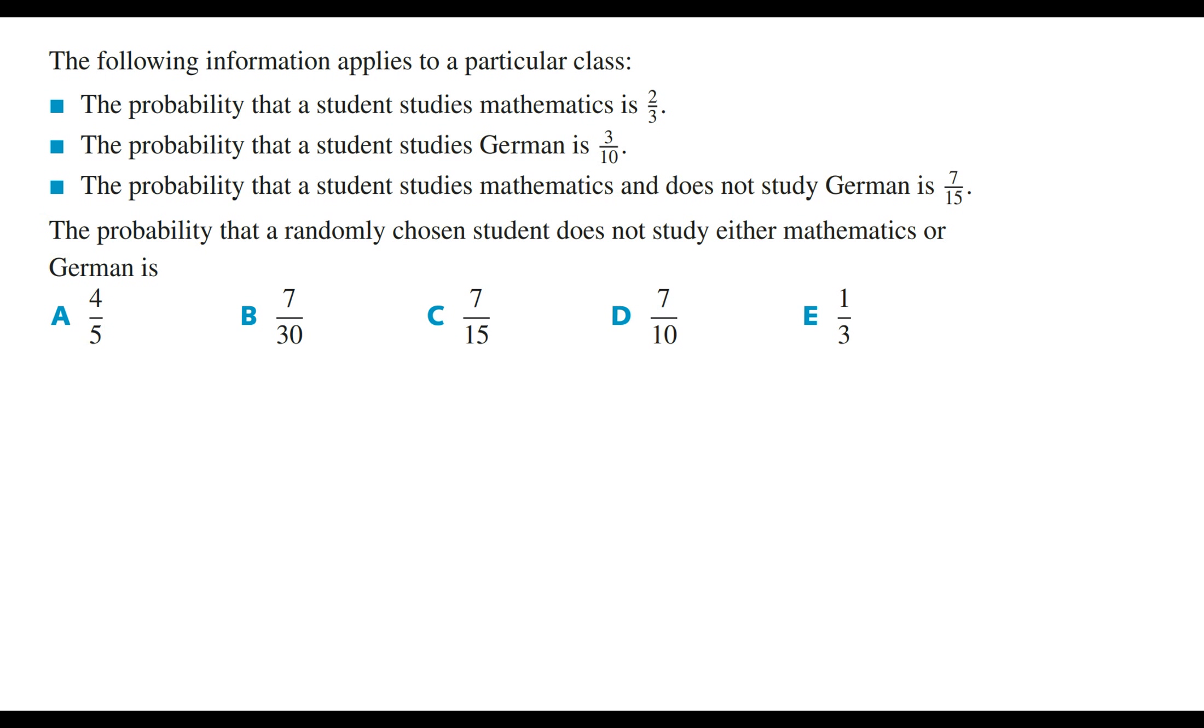Notice that we have two events: the probability that a student studies maths or studies German. Now for these types of questions it's best to either draw a Venn diagram or a probability table.